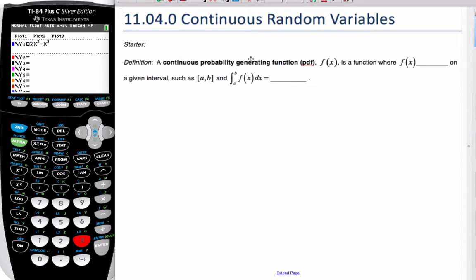Okay, so today we're going to talk about continuous random variables and the definition of a continuous probability generated function, a PDF. We see this in our calculator. f of x is a function where the function is always positive or zero on some given interval where if I take the integral from a to b, that this area underneath the curve is equal to one.